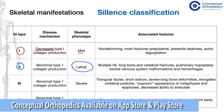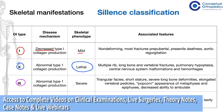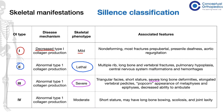In type 3, which is the most severe form of osteogenesis imperfecta seen in living children, there is triangular facies and short stature. These children have severe long bone deformities, elevated vertebral pedicles, a popcorn appearance of the metaphysis and epiphysis, and a decreased ability to ambulate.